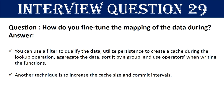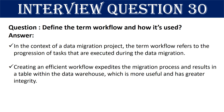Question 29: How do you fine-tune the mapping of the data during data migration? There are several steps: you can use a filter to qualify the data, utilize persistence to create a cache during the lookup operation, aggregate the data sorted by a group, and use operators when writing the functions. Another technique is to increase the cache size and commit intervals.